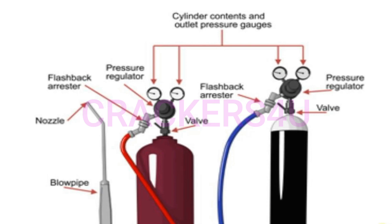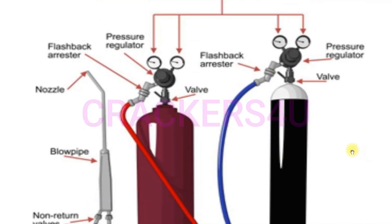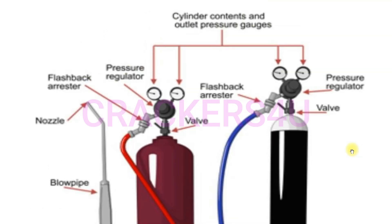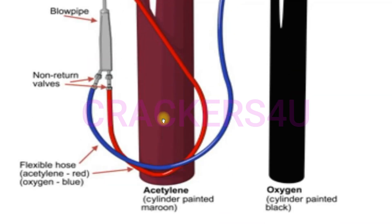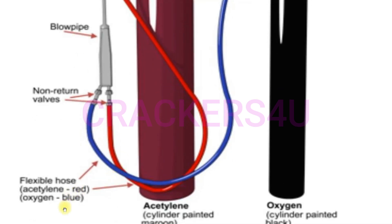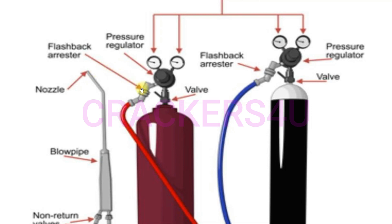Look at the picture — here you can see a gas welding unit with all its parts. The oxygen cylinder is in black color and the acetylene cylinder is painted in maroon color. The flexible hose for oxygen is blue and acetylene is red. Parts include blowpipe, nozzle, flashback arrestor, pressure regulator, and wall.